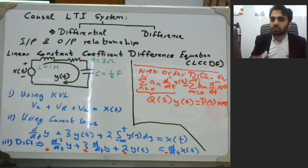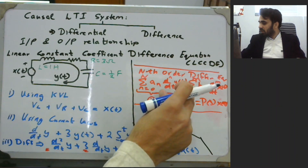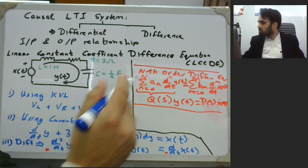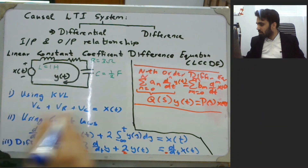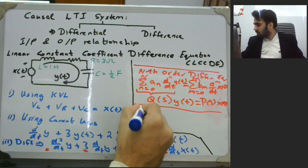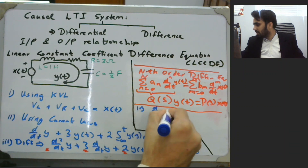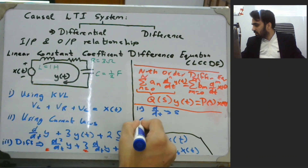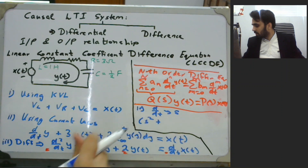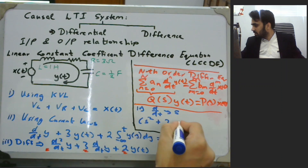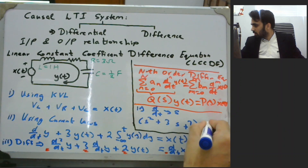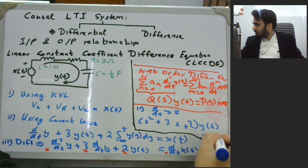Coming back to our original circuit, this is a second order circuit so n is set to 2. Setting d/dt as s, this becomes: s² + 3s + 2 times y(t) equals s times x(t).